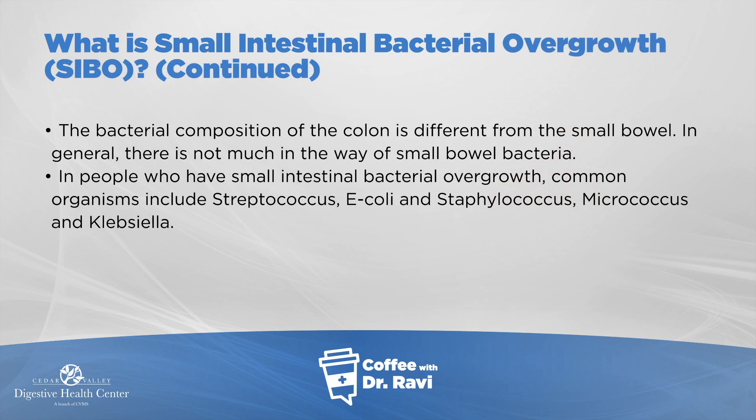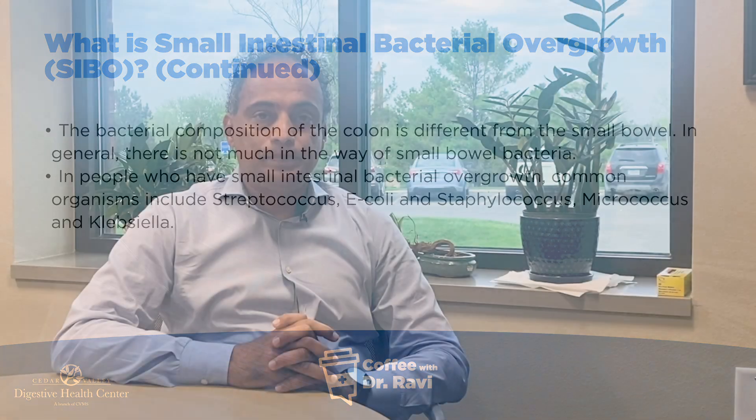In small intestinal bacterial overgrowth, certain bacteria start growing in the small bowel and can cause problems. These bacteria can have names such as Streptococcus, E. coli, Micrococcus, and Klebsiella.